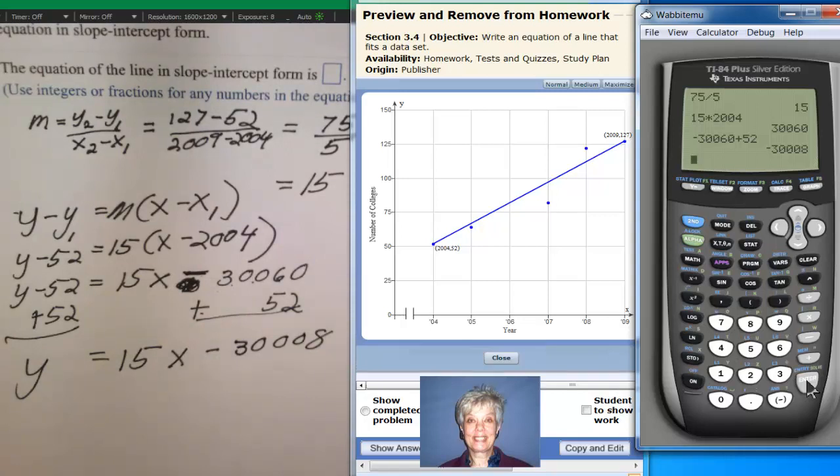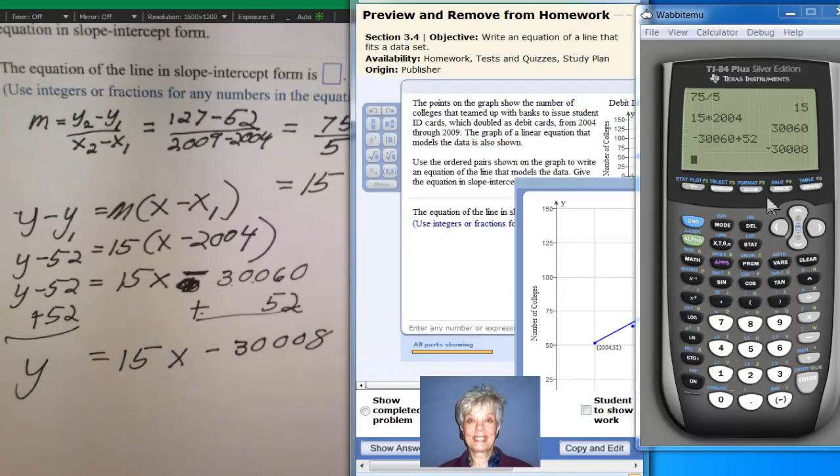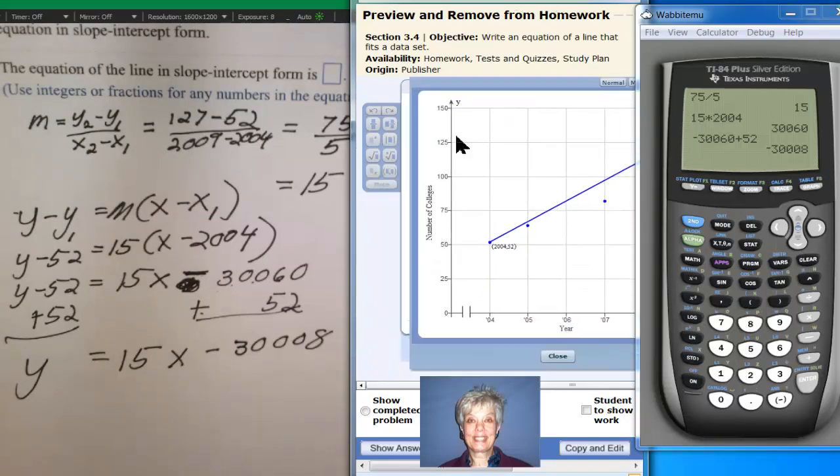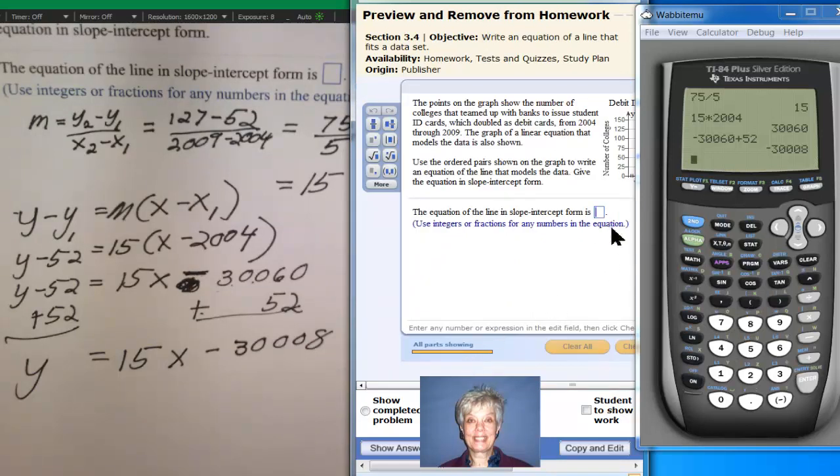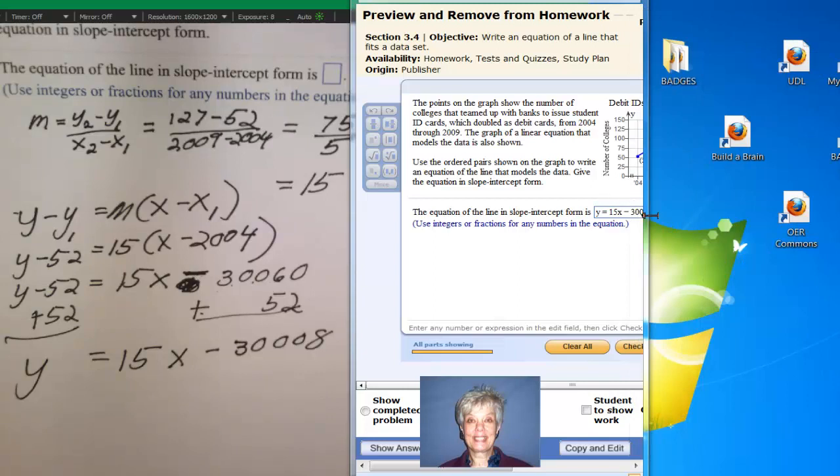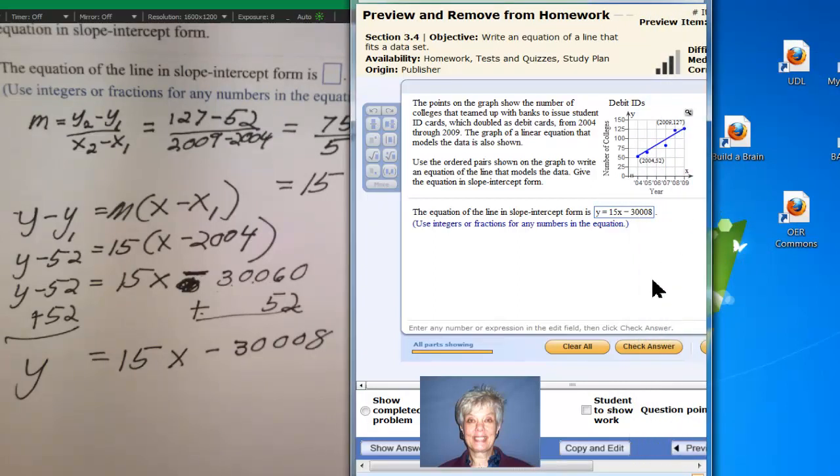So let's see if that's the answer that they want. Let's close the graph. And I'm going to enter my answer here. Y equals 15x minus 30008. I'm going to move the calculator out of the way, pull this out. Then I'm going to hit check answer. And it tells me I'm fantastic. I actually got it right.